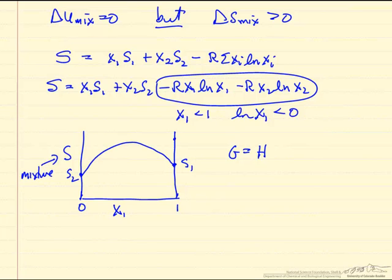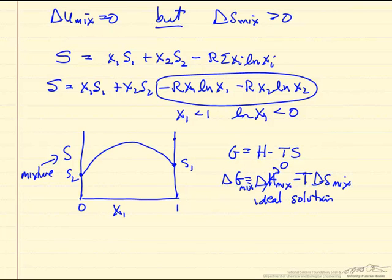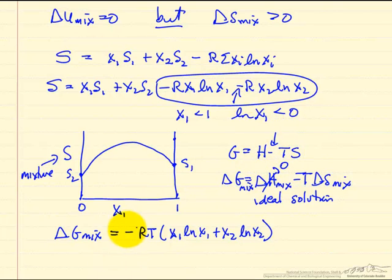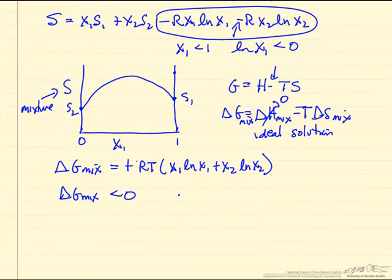And then the last variable, Gibbs free energy, which is H minus TS. The change in Gibbs free energy for mixing is the change in enthalpy of mixing minus T times the change in entropy of mixing. Well this is 0 for ideal, and what we're looking at everywhere here is ideal. So for ideal solution, for ideal gas. And so delta G of mixing is going to be RT x1 ln x1 plus x2 ln x2. And then there's a minus sign here, and of course a minus sign here, which makes this a plus sign.